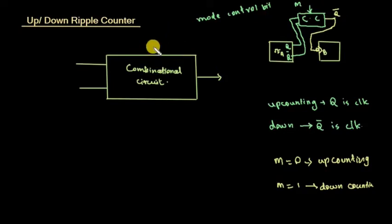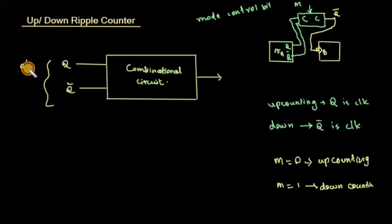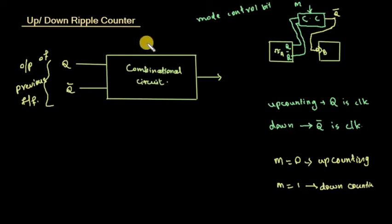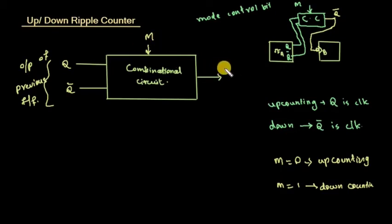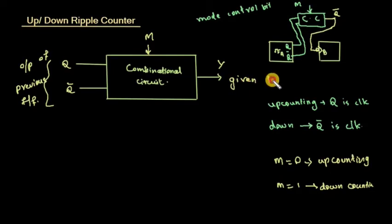In the combinational circuit, Q and Q-bar are the outputs of the previous flip-flop. The mode control bit determines the behavior: when 0, up counting is performed using Q; when 1, down counting uses Q-bar. The output Y is given to the next flip-flop.